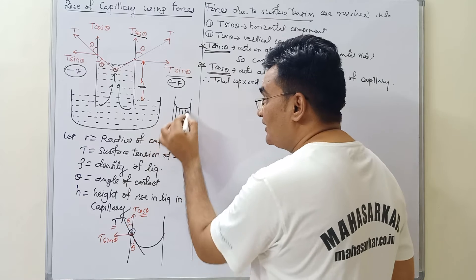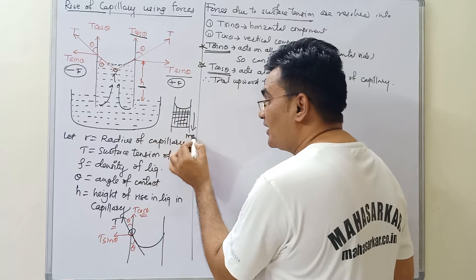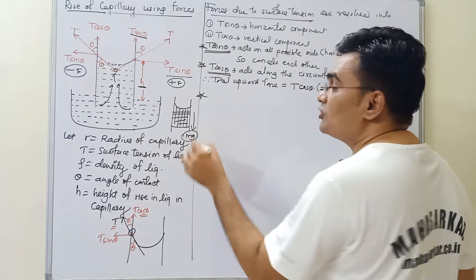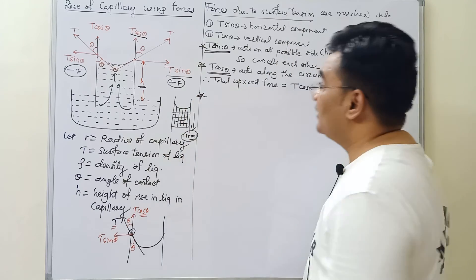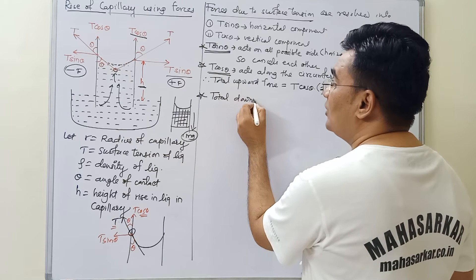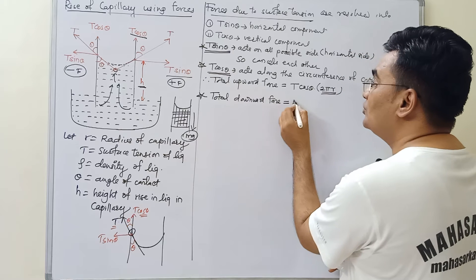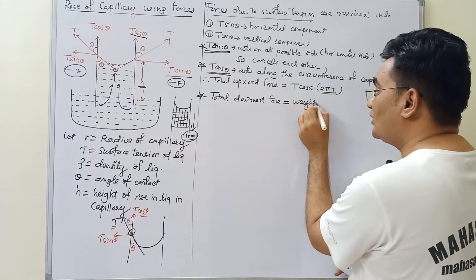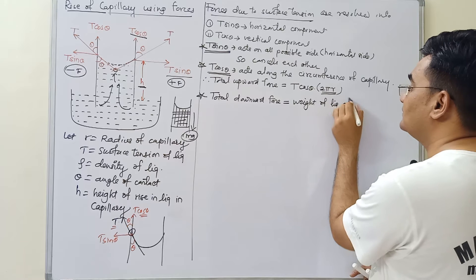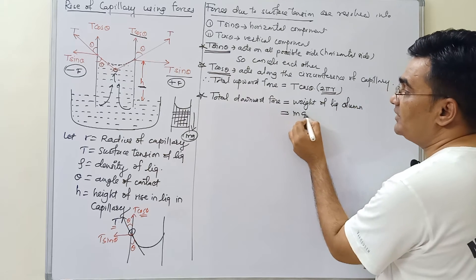The liquid inside the capillary has a certain weight directed downwards. So the total downward force equals the weight of the liquid column in the capillary, which is mass times g — that is m × g.